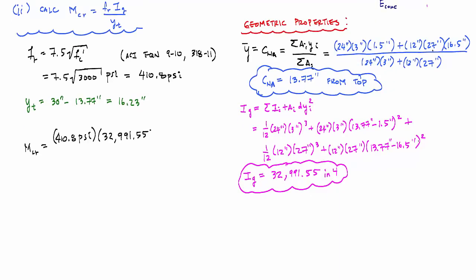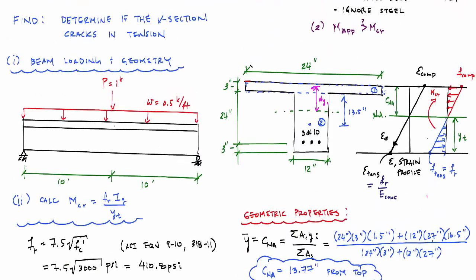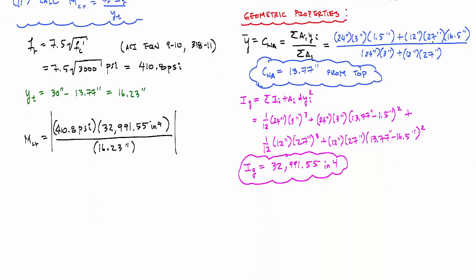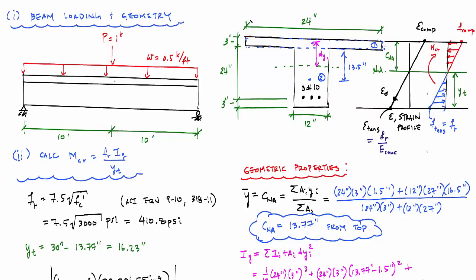Now plugging into the cracking moment formula — just calculating the magnitude, since the direction is already known from the moment diagram (compression at top, tension at bottom): Mcr = fr × Ig / yt = 410.8 × 32,991 / 16.23 = 835,054 lb-in. Converting to kip-feet, this gives Mcr = 69.59 kip-ft.